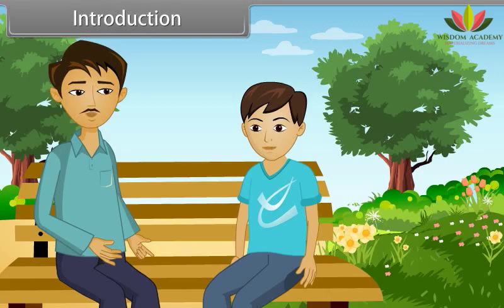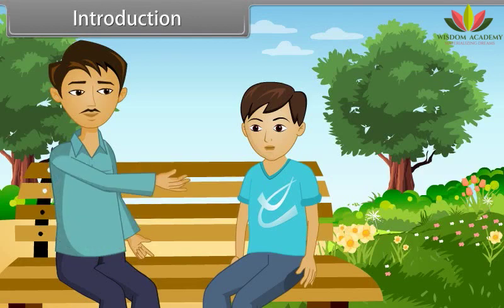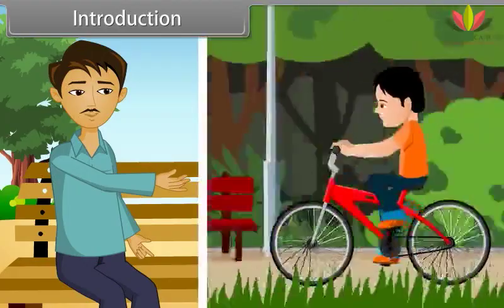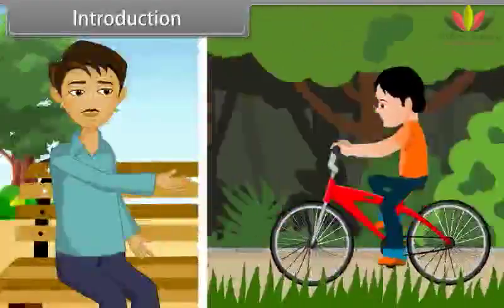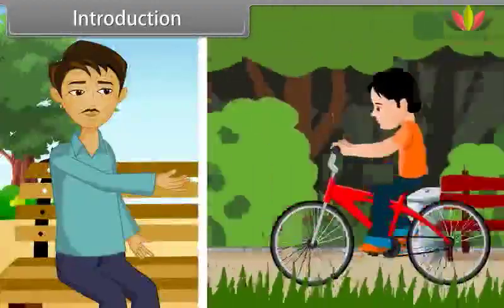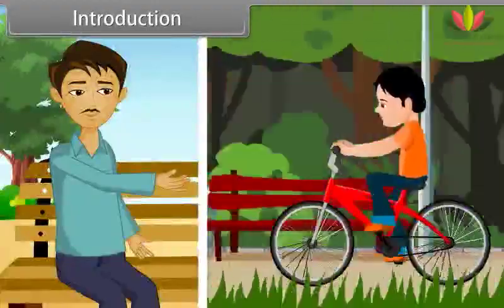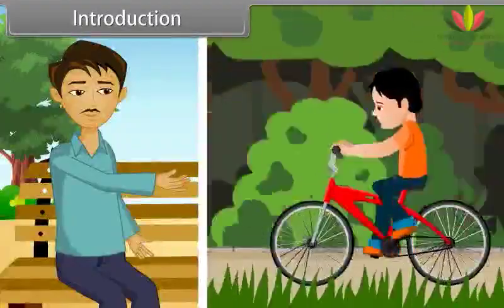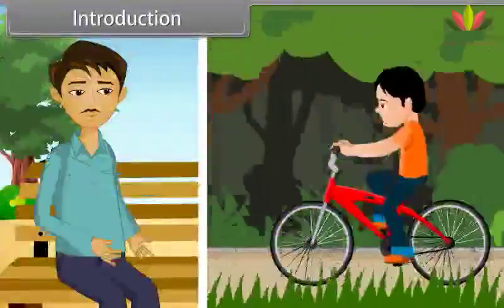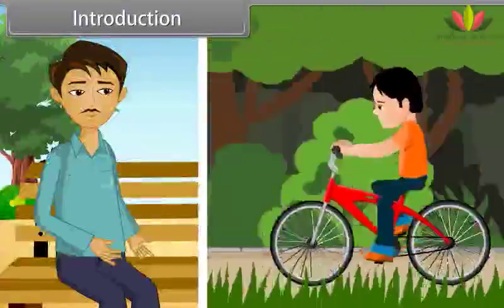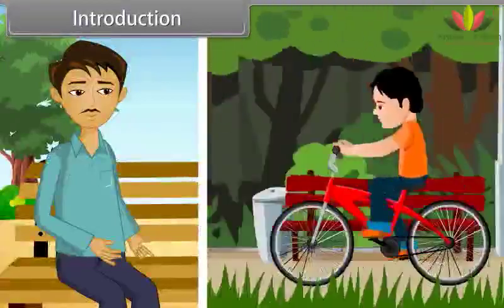But do you also know about work and power? No, Papa. Okay, let me explain you. That boy riding the bicycle is called work done. The capacity of that boy for how much time he will ride this bicycle is called energy. And rate of doing work, at what speed he rides the bicycle, is called power. Now let's take a brief look on work, energy and power.